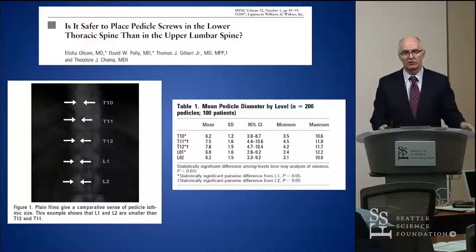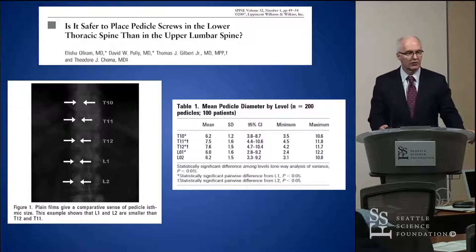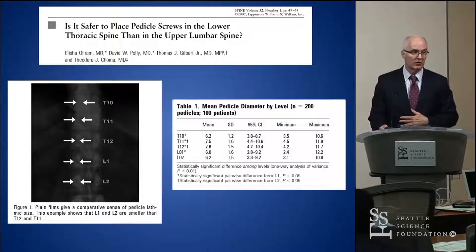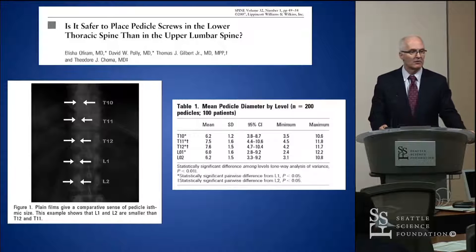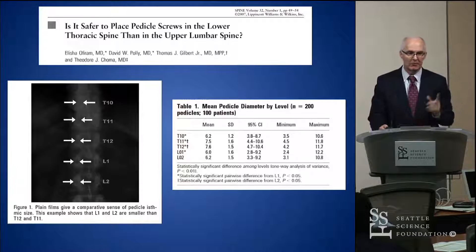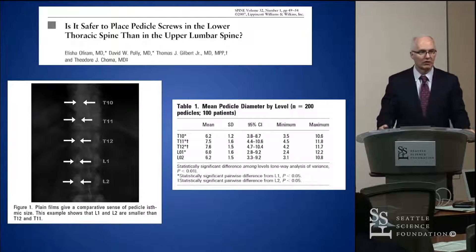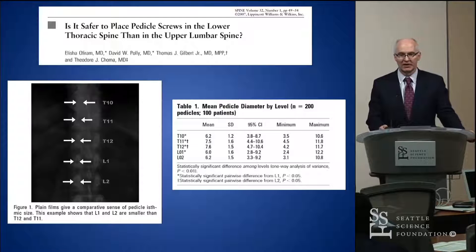We did a study where Larry Lenke and I both started looking at the L1 pedicle on a plain film. If the L1 pedicle is small, you're going to have a tough day; if it's big, you're going to have a good day. The trivia question I always ask my residents: what pedicle is bigger, T12 or L1? We're taught the pedicles get bigger from top to bottom — but that's not true at the thoracolumbar junction. L1 is actually smaller in 97% of cases than T12.